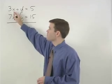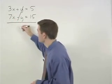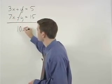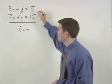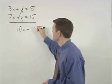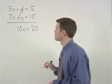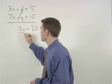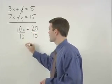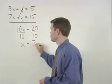On the left, 3x plus 7x is 10x, and on the right, 5 plus 15 is 20. Dividing both sides by 10, x equals 2.